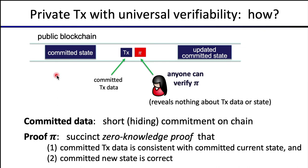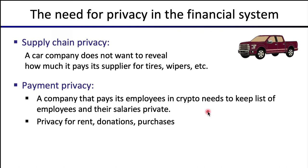The proof reveals nothing about the transaction data or the state, yet can be verified by anyone. That's how we achieve privacy with universal verifiability on a public blockchain. Now, you may be wondering: why do we need privacy on the blockchain in the first place, and more generally, why do we need privacy in the financial system?